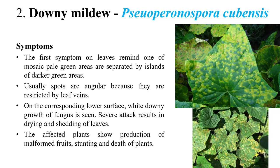The next disease is downy mildew, caused by Pseudoperonospora cubensis. The name itself indicates a downy appearance. On the upper surface we can see alternate green and yellow patches. The first major symptom is pale green, island-like symptoms on the leaf. The spots are usually angular, and in severe stages all small spots coalesce, giving a completely yellow appearance on the upper surface.